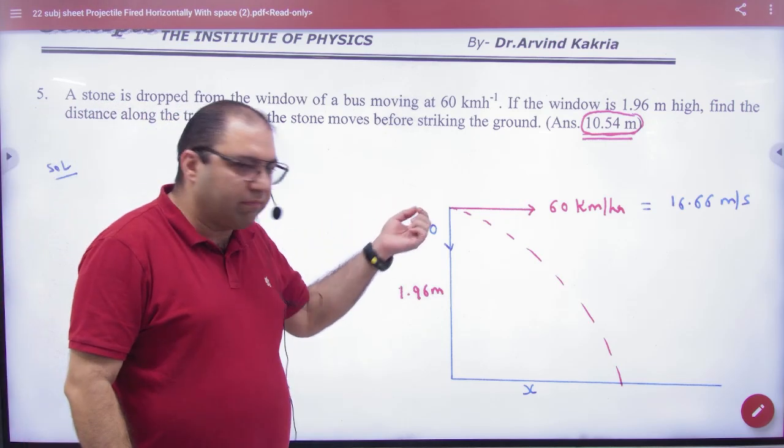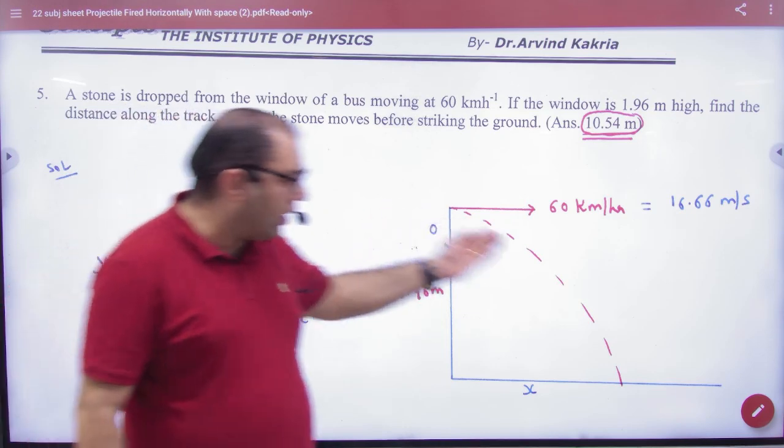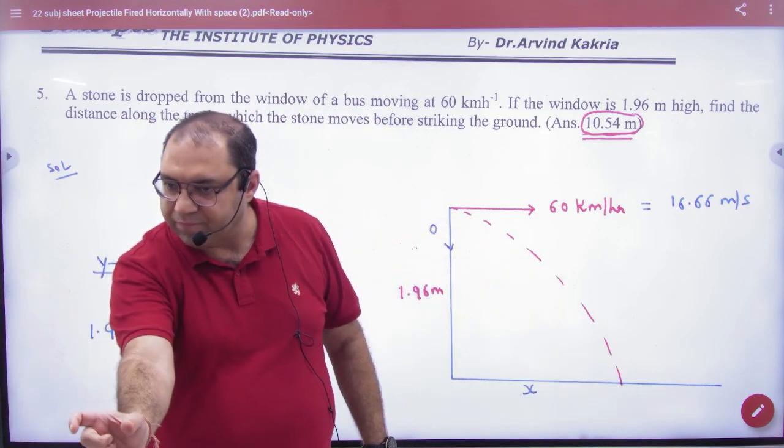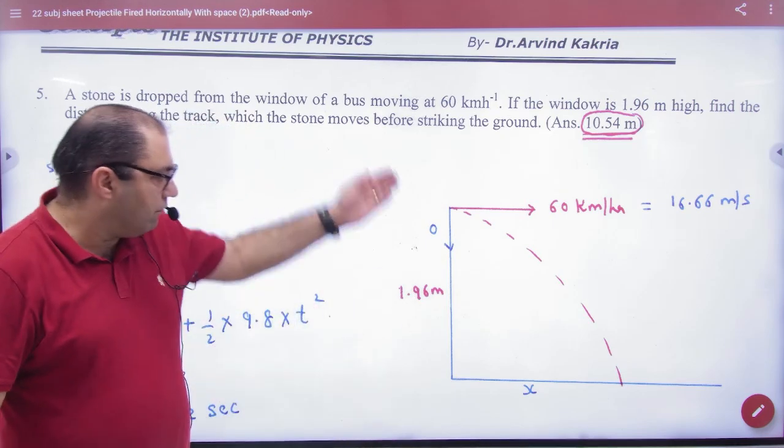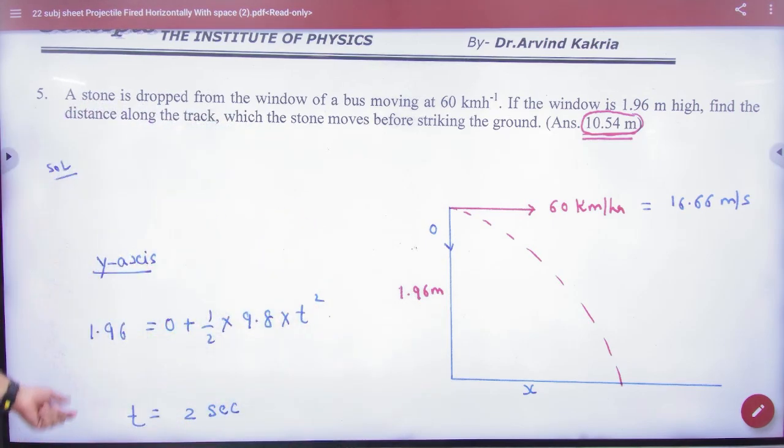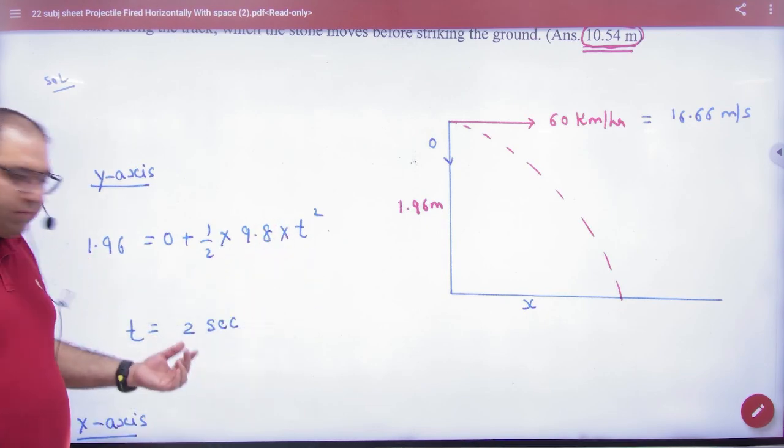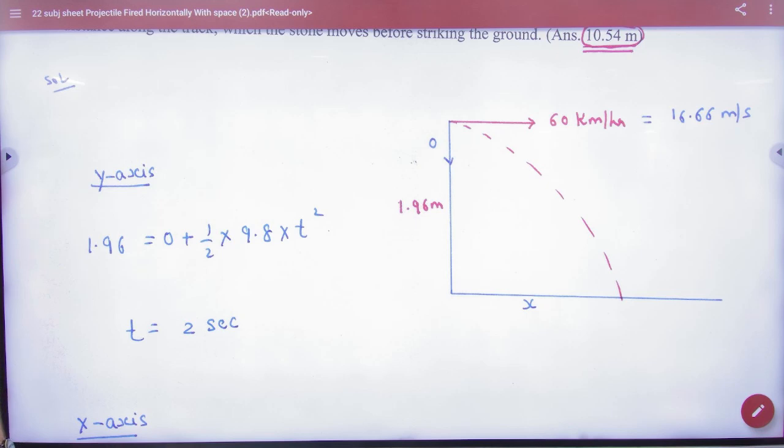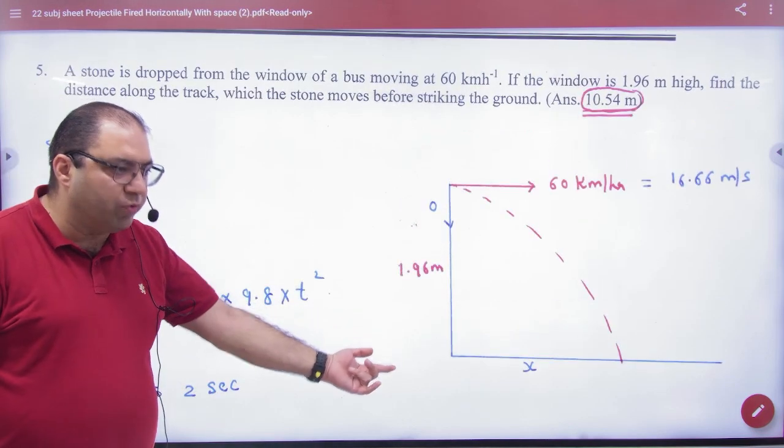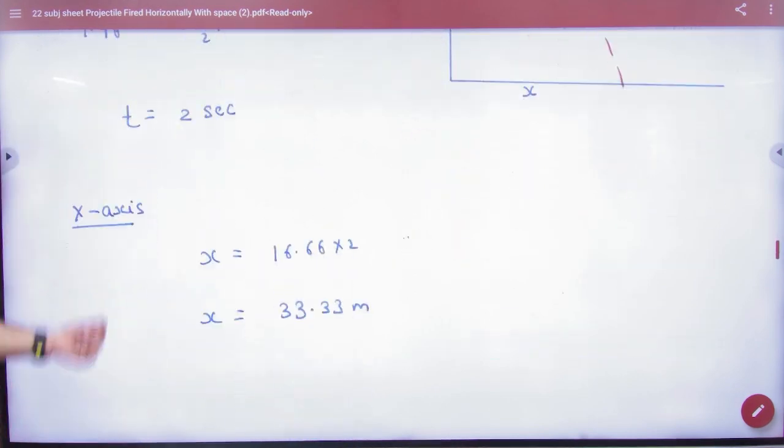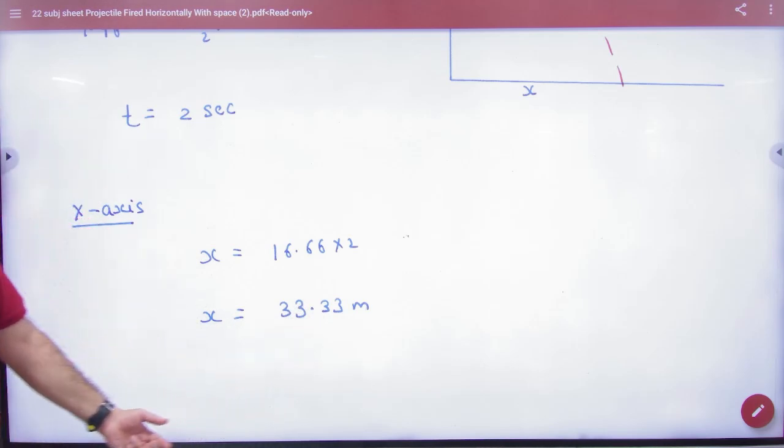So this goes from the bus. Then she goes a little further. Let us remove our x. This is clear. Y-axis distance is 1.96, so I have put 1.96, zero plus half gt square, time 2 seconds. Then x-axis, s is equal to vt, so x is equal to 16.66 into 2, 33.33.